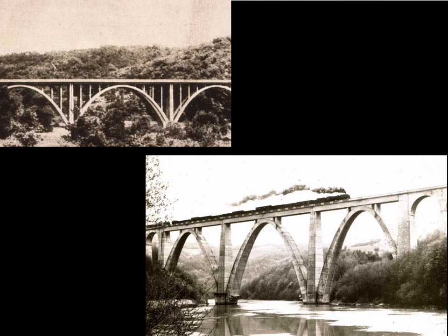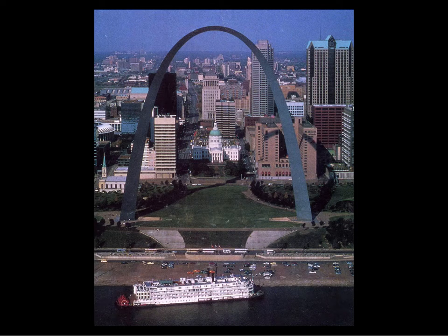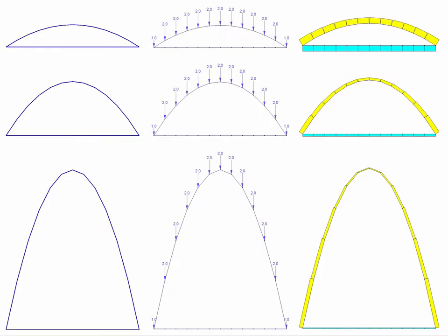Sometimes the situation favors an arch of very high rise. For example, these train bridges going across a deep valley made it feasible to put in very large, tall arches, which are very efficient in handling gravity forces. Sometimes we're motivated to make an arch high for emotional, aesthetic, or symbolic reasons — this is the Gateway Arch in St. Louis, which has an observatory at the top, but it's unbelievably symbolically important as the gateway to the west, which is what the city of St. Louis has been historically.